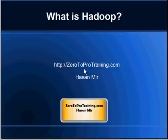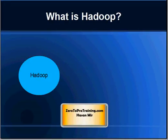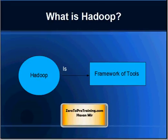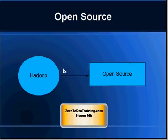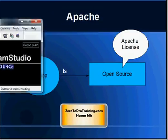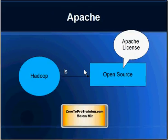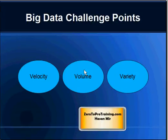Hello, in this session we will talk about what is Hadoop. This is Hassan Mir from zerotoprotranining.com. Hadoop is a framework of tools — it is not one software that you can download on your computer. The objective of these tools is to support running of applications on big data. Hadoop is an open source set of tools distributed under the Apache license, so no particular company controls the direction of Hadoop; it is maintained by Apache.